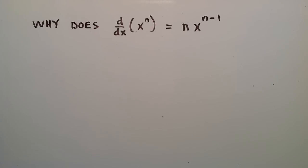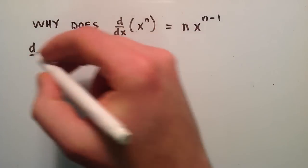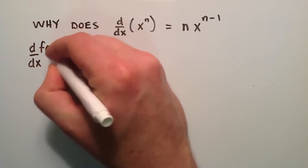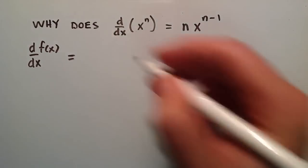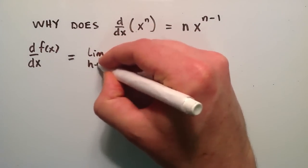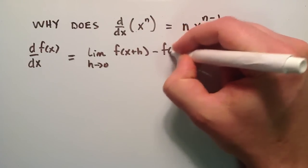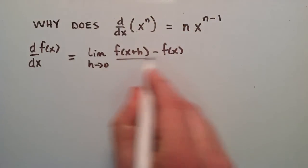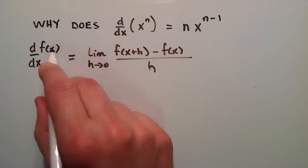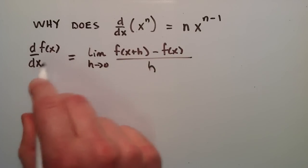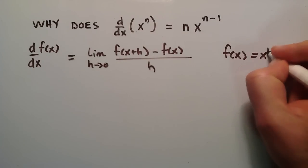In this part we're just going to prove this statement. Let's look at the definition of the derivative of some function f of x. We know that we can figure out the derivative of some function f of x by taking the limit as h approaches 0 of f of x plus h minus f of x divided by h. For our case, our f of x is going to be x to the n — we're trying to find the derivative with respect to x of x to the n.